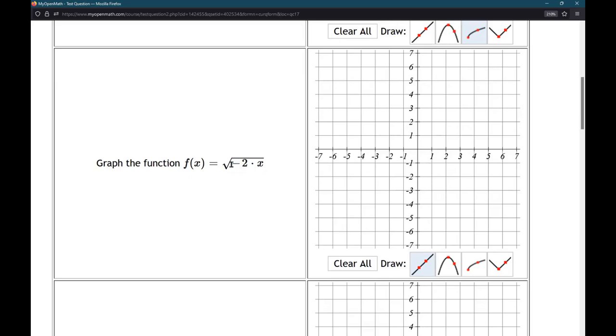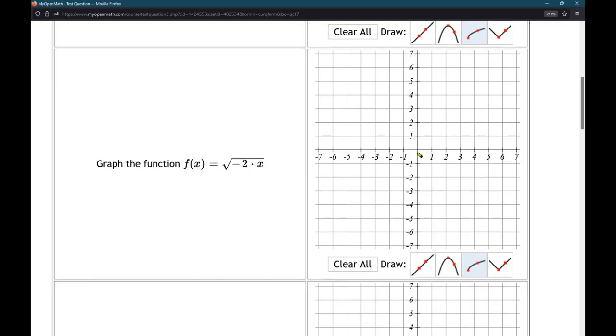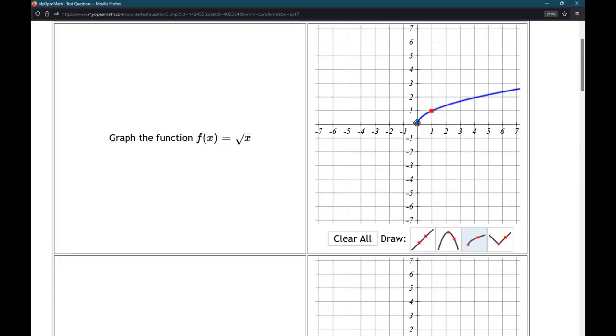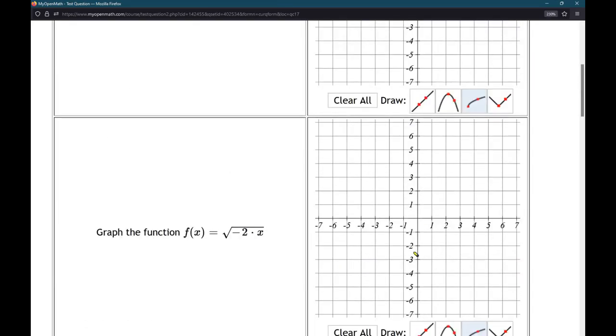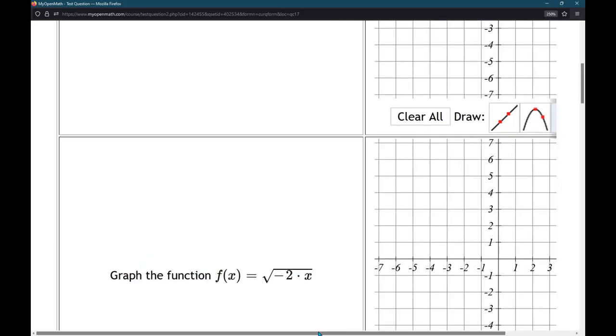All right, next up, negative 2 times x. So it's a horizontal stretch. This one is a negative 1 half stretch. Remember, horizontal, the opposite of what it looks like. So same function. The x-coordinate that was at 0 stays there. The x-coordinate that was at positive 1 is going to jump to negative 2 now.